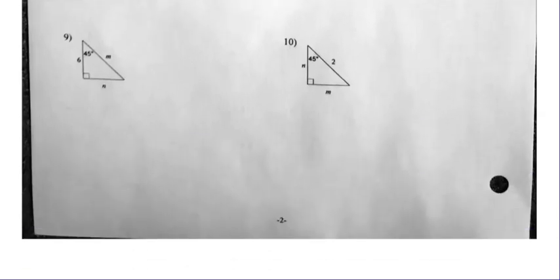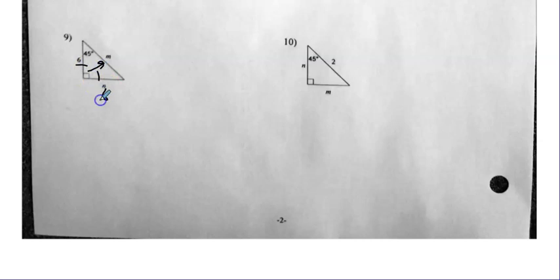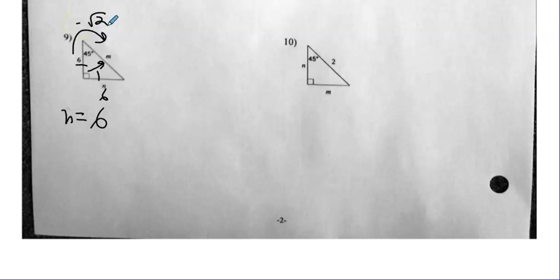Number nine — I have a 45-45-90. So these two legs are equal. That's my hypotenuse. So N is six. And for my hypotenuse, all I do is multiply to get bigger by radical two. So that's six radical two, and that's M.